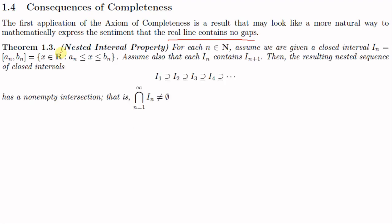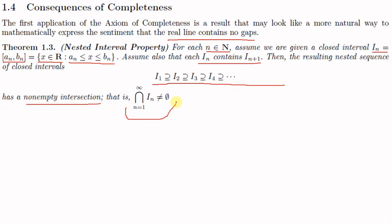The first theorem is named the Nested Interval Property, which states that for each n element of ℕ, assume that we are given a closed interval I_n = [a_n, b_n], defined as the set of all x in ℝ such that a_n ≤ x ≤ b_n. Assume also that each I_n contains I_{n+1}. Then the resulting nested sequence of closed intervals I_1 ⊇ I_2 ⊇ I_3 ⊇ I_4 ⊇ ... has a non-empty intersection.